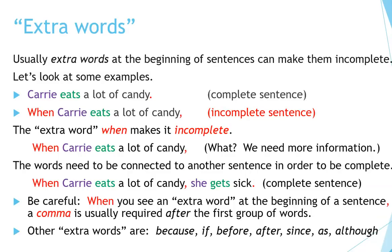For example: 'When Carrie eats a lot of candy' — what? We need more information. The words need to be connected to another sentence in order to be complete. For example: 'When Carrie eats a lot of candy, she gets sick.' — complete sentence.